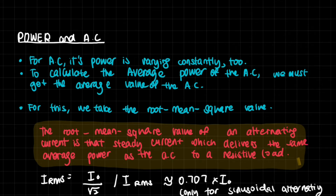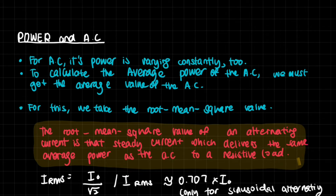Now let's talk about power in alternating current. We've discussed voltage and current, so it makes sense to discuss power. For AC, is the power supplied constant or also changing? The answer is that it is constantly changing — this is why fluorescent lamps can appear to flicker. Because dealing with changing power is difficult, we instead aim to find the average power, the average energy dissipated per unit time.